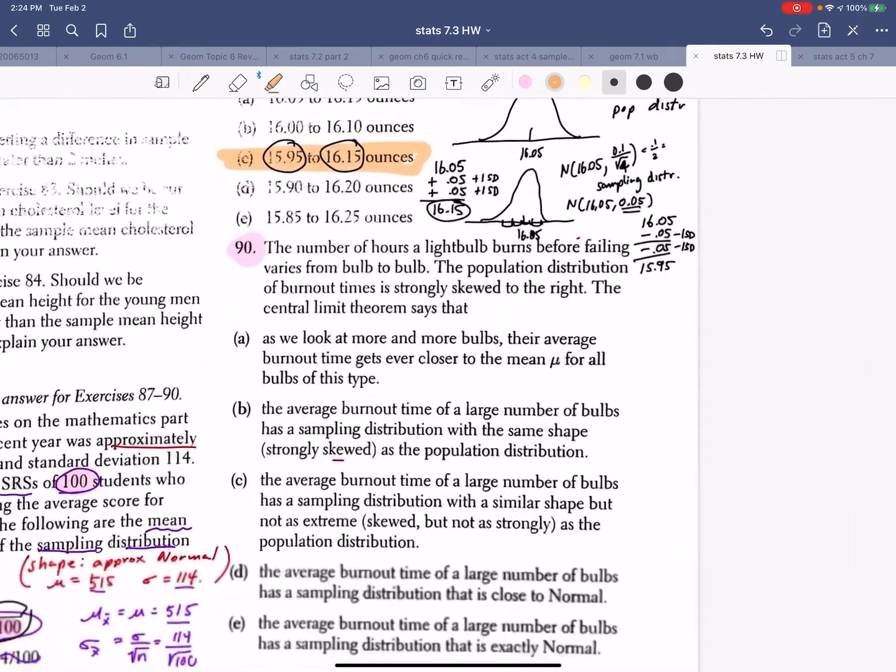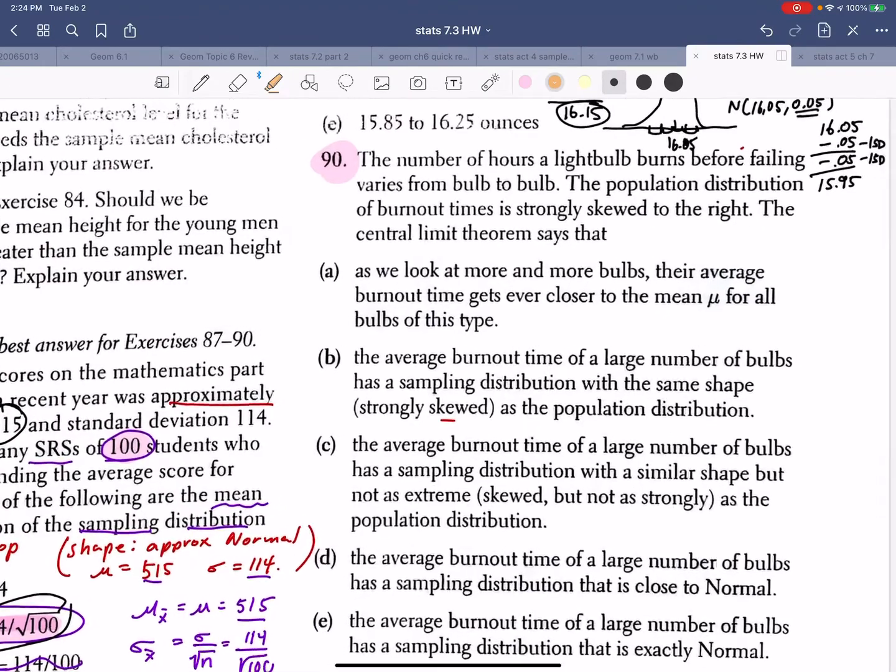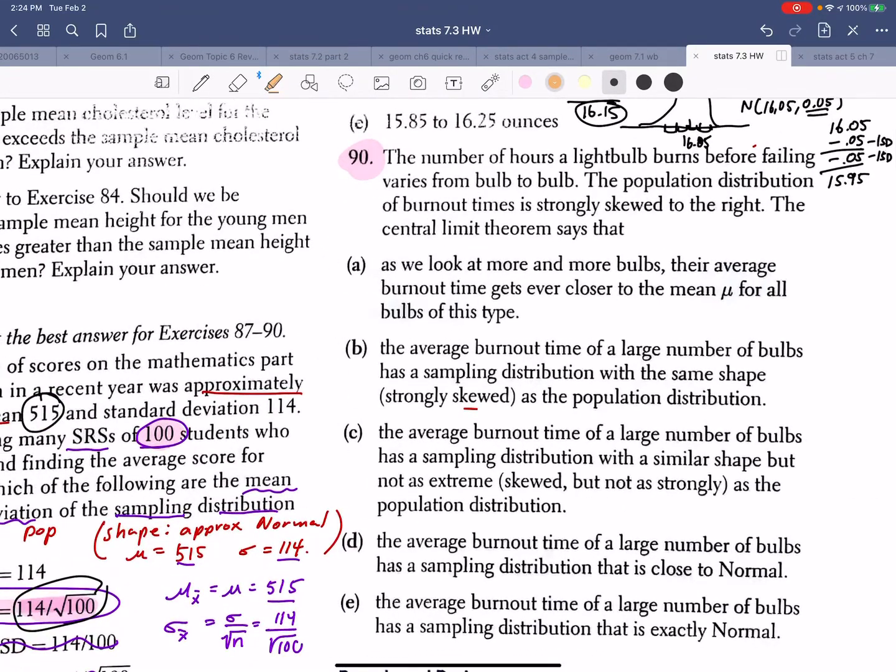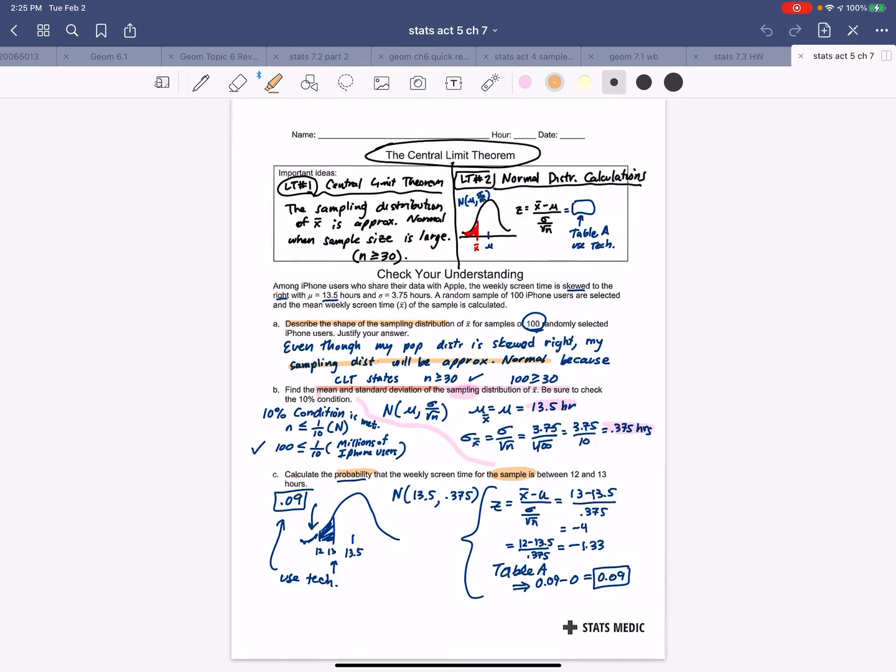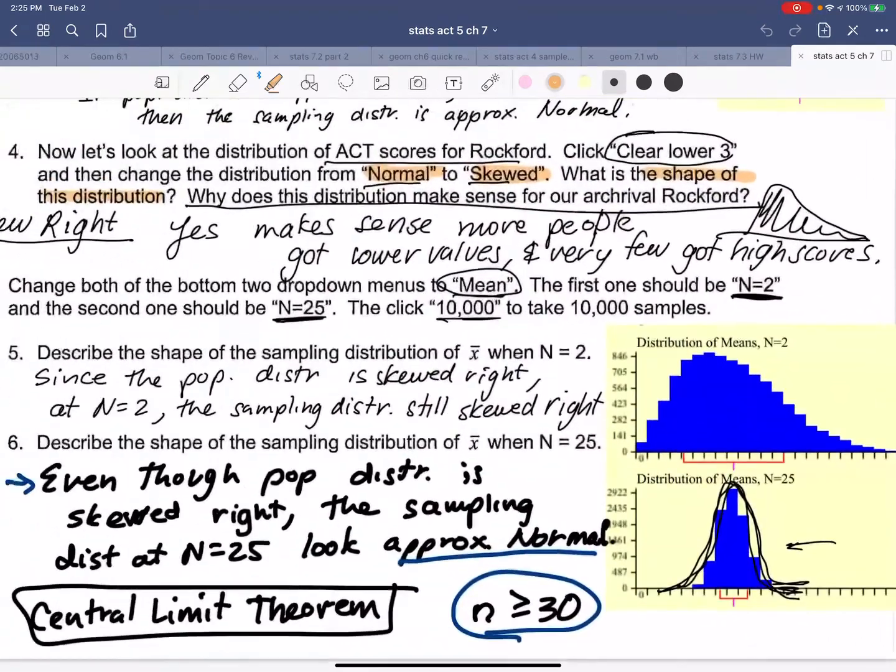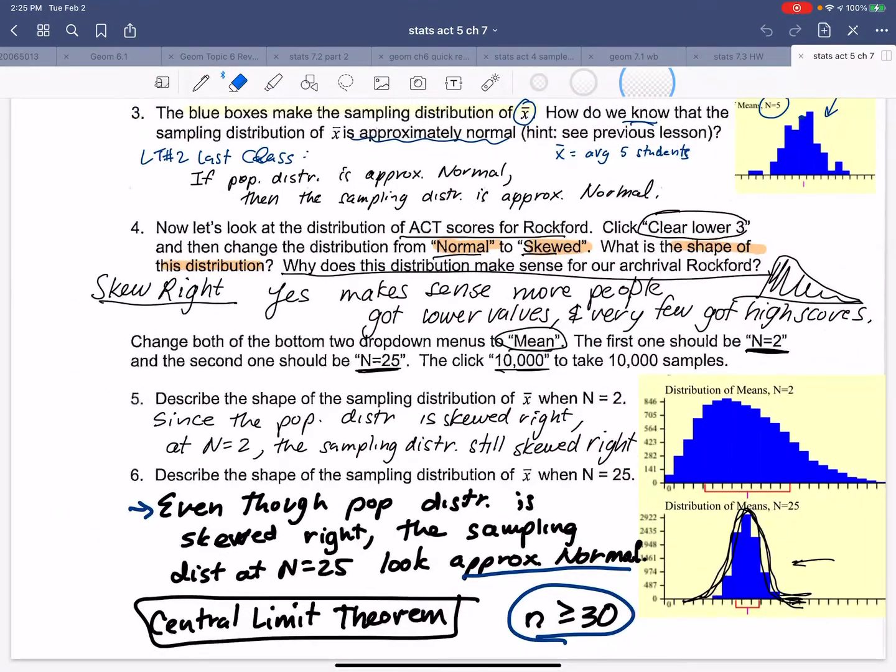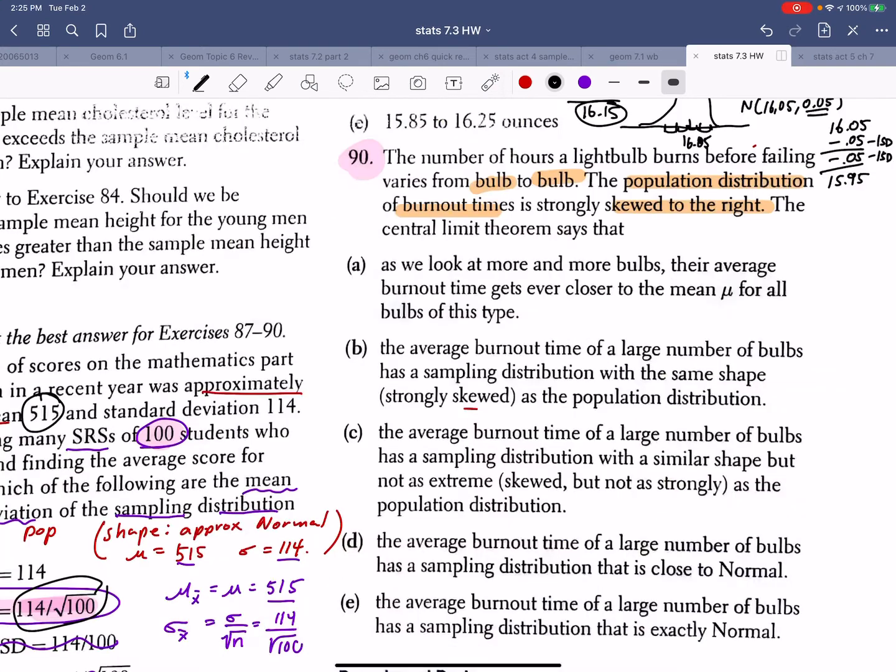Last one, question number 90. It says, the number of hours a light bulb burns before failing varies bulb to bulb. So, we know that many things have a high level of variability. The population distribution of burnout times is strongly skewed right. So, this is similar to the data we collected today, right? Our data is skewed right. This is actually not a picture of my raw data. That's actually an n of two. My raw data looked something like pretty skewed, right? My population data.